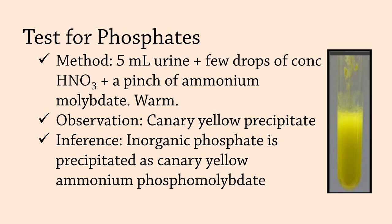Test for phosphates: Upon warming with ammonium molybdate in the presence of nitric acid, inorganic phosphate is precipitated as canary yellow ammonium phosphomolybdate. Take 5 ml of urine, add a few drops of concentrated nitric acid plus a pinch of ammonium molybdate, and then warm it up. Note the formation of a canary yellow precipitate.